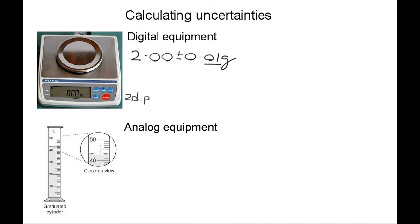Now for analog, such as measuring cylinders, you have to look at the smallest scale division. So in this case it's one centimeter cubed.